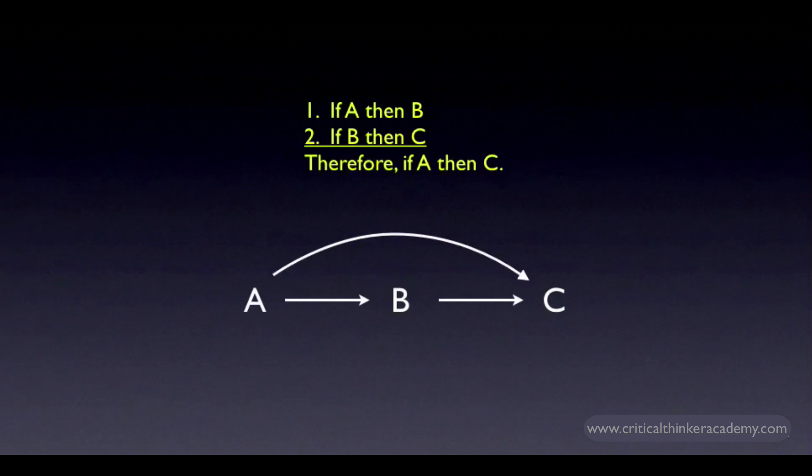Note that both the premises and the conclusion are conditionals in this argument form. We're never actually asserting that A or B or C is true. All we're asserting is a set of hypothetical relationships. If A was true then B would follow, and if B was true then C would follow, and from this we can assert that if A was true then C would follow. In logic and mathematics this kind of relationship is called a transitive relationship.